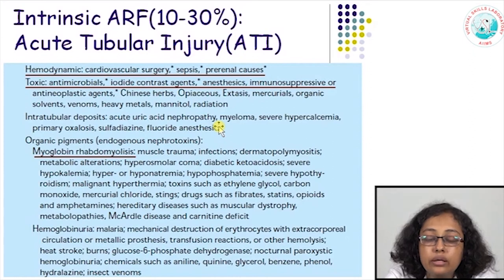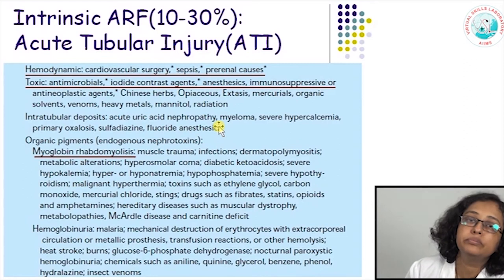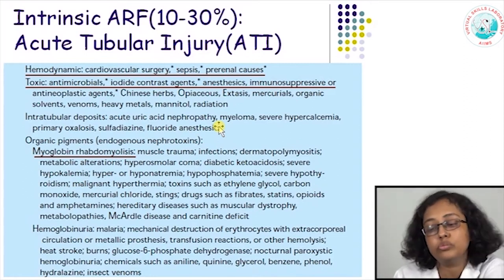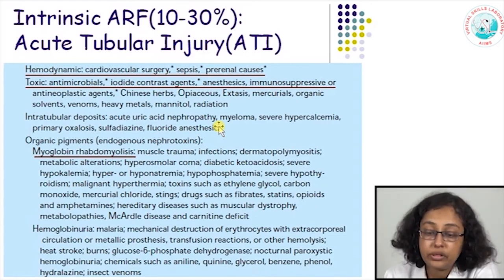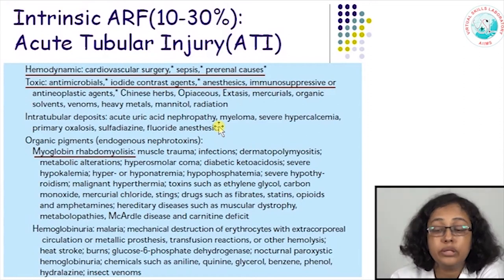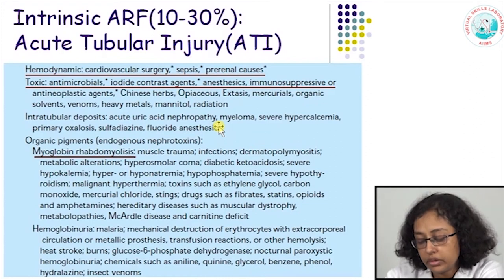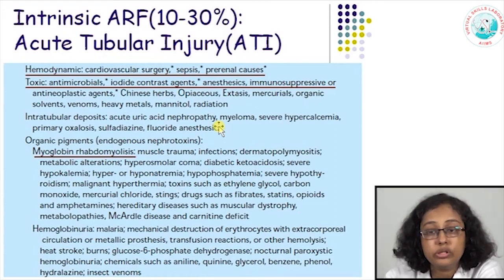In rhabdomyolysis from crush injuries, myoglobin released from skeletal muscles gets deposited in renal tubules and can lead to tubular injury. Hypothermia, toxins like ethylene glycol, carbon monoxide, and hemoglobinuria — just like myoglobinuria from crush injury — any cause of intravascular hemolysis like malaria or transfusion reactions can lead to free hemoglobin-associated renal tubular injury.